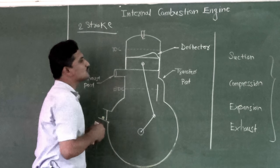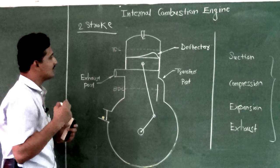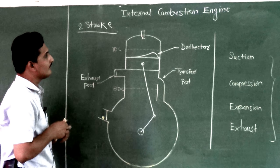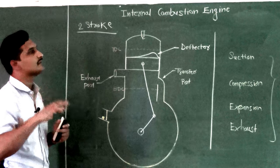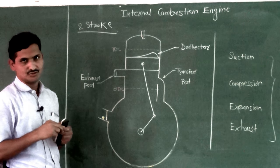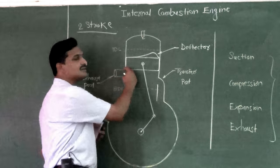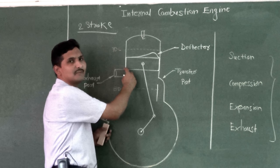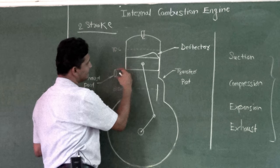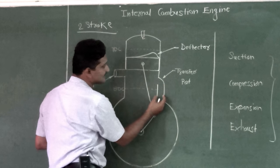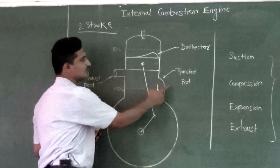In a four-stroke engine we have inlet valves and exhaust valves, but in a two-stroke engine we do not have inlet and exhaust valves. The valves are replaced by ports. A port is simply an opening provided in the cylinder wall. There are two ports: the exhaust port and the transfer port.